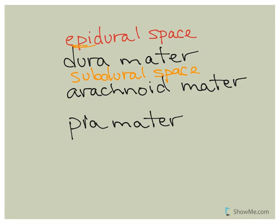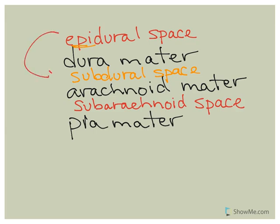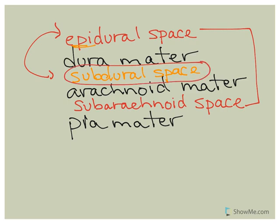We also have the subarachnoid space. With the cranial meninges, we said that the epidural and subdural spaces were potential spaces. Now with the spinal meninges — the ones marked in red are not potential spaces. The subdural space is a potential space, but when we look at the spinal cord there is actually stuff found within the epidural space.